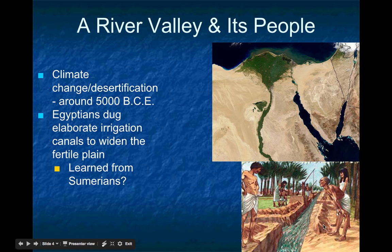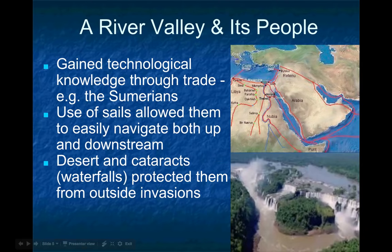There is some suspicion that the Egyptians actually learned how to dig canals from the Sumerians, which would suggest they were trading with one another. We also know the Egyptians learned other technological knowledge like the wheel, the plow, and writing — again with suspicion that this came from the Sumerians. However, other historians and archaeologists suspect some independent development of these ideas. Many suggest the wheel was actually invented simultaneously in different parts of the world. What's important is that the Egyptians had similar technology to the Sumerians.